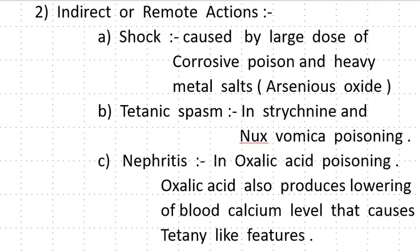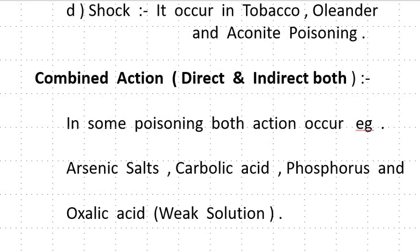Indirect or remote action. These include shock caused by large doses of corrosive poison and heavy metal salts, for example arsenic oxide. Second is tetanic spasm, as in strychnine and Nux Vomica poisoning. Third is nephritis in oxalic acid poisoning. Oxalic acid also produces lowering of blood calcium level, which causes tetanic-like features. Shock also occurs in tobacco, oleander and aconite poisoning.